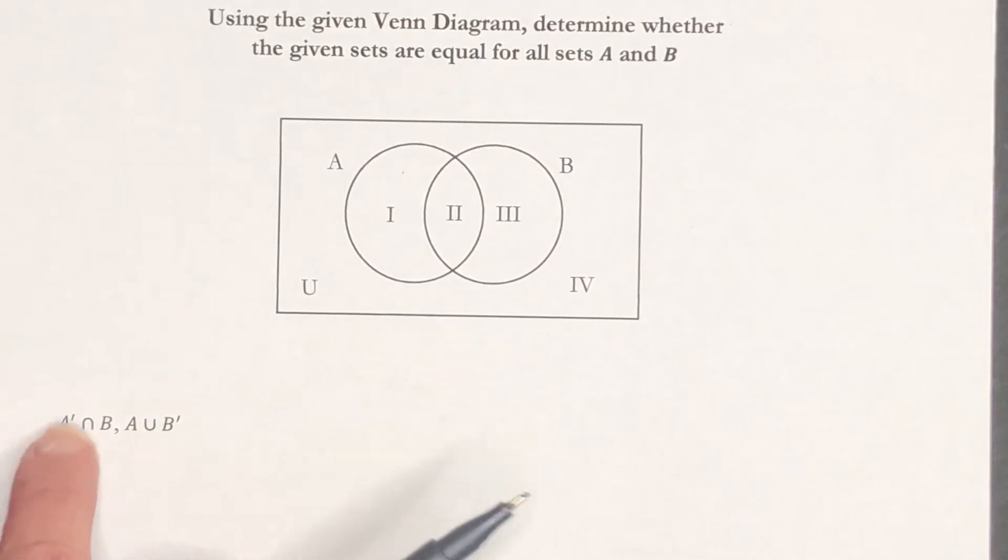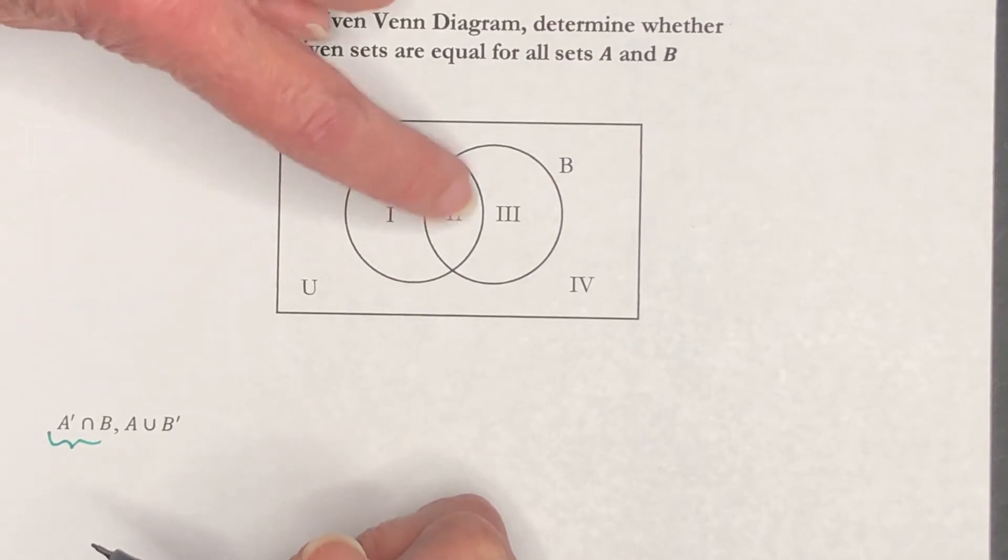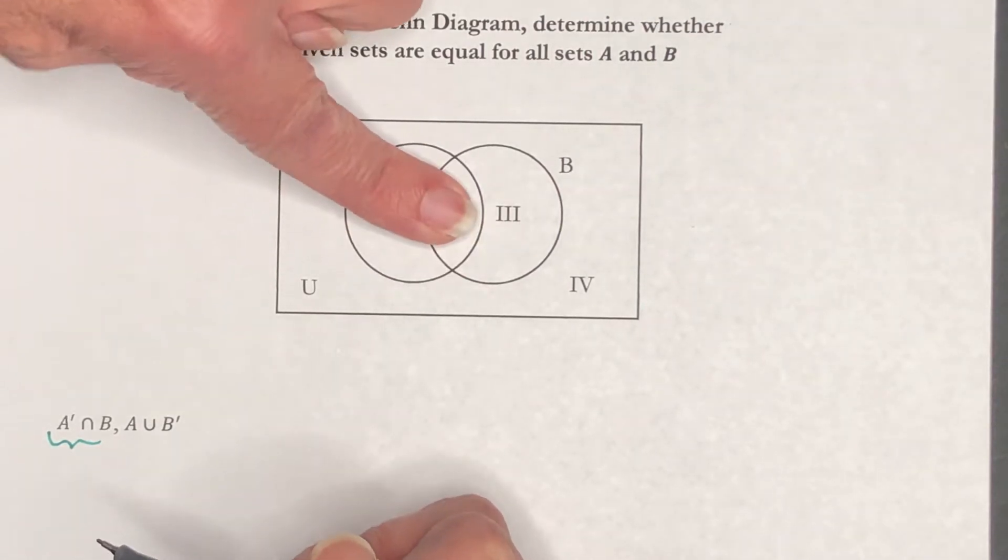Okay, so we're just going to talk about what regions these are representing. I have the complement of A intersected with B. Complement of A is going to be, you take out regions 1 and 2 because those are A.